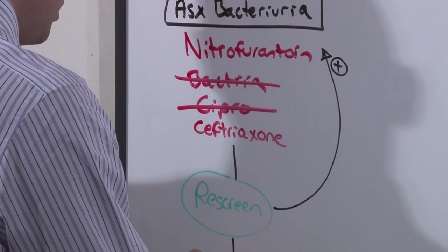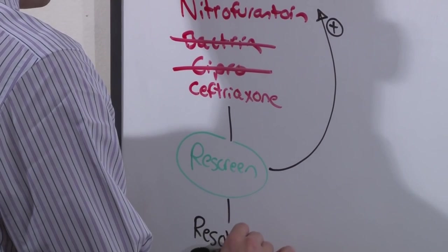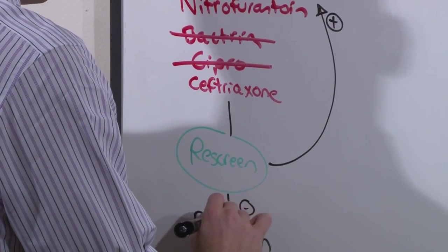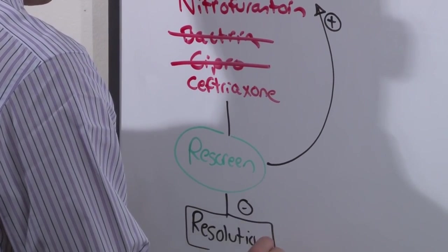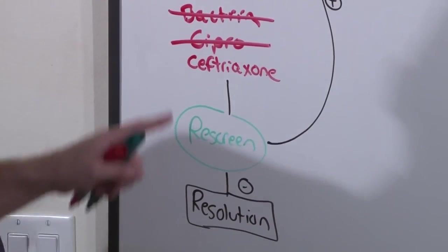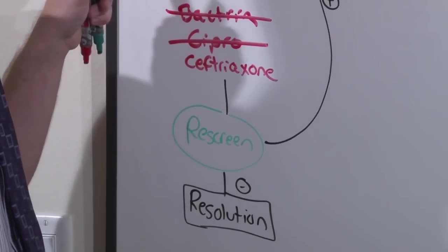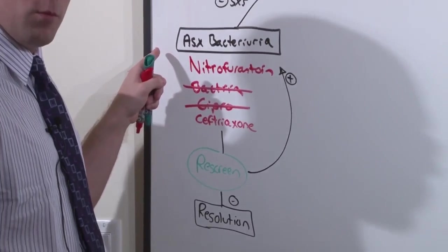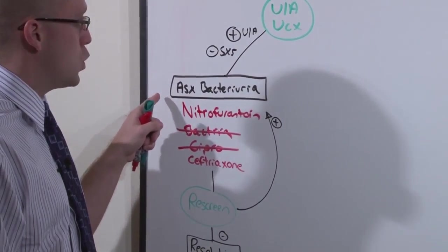If you've eradicated the bug and the re-screen is negative, the condition is resolved and you go back to the normal screening patterns. This is for asymptomatic bacteriuria. This is really how UTIs differ from normal medical patients to patients who are pregnant.